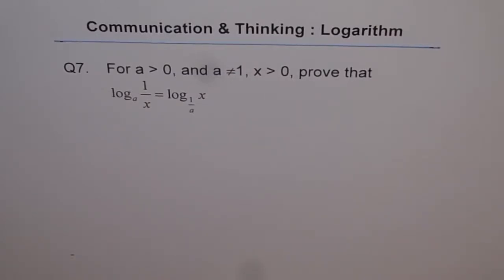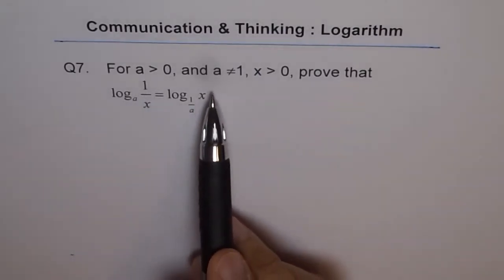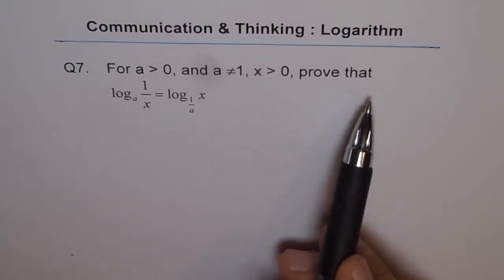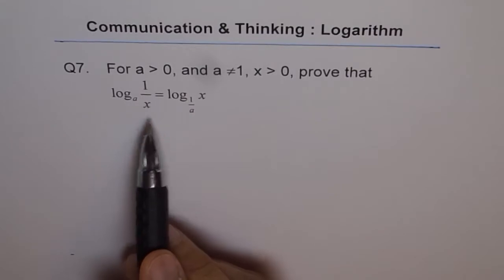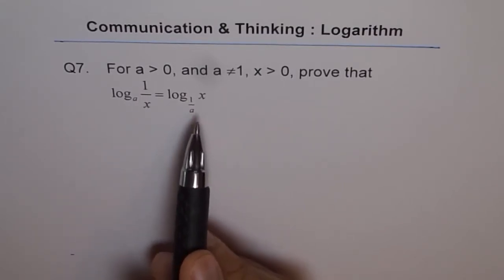Communication and thinking problems on logarithms. Question 7: For a greater than 0 and a not equal to 1, and x greater than 0, prove that log to the base a of 1 over x is equal to log to the base 1 over a of x.